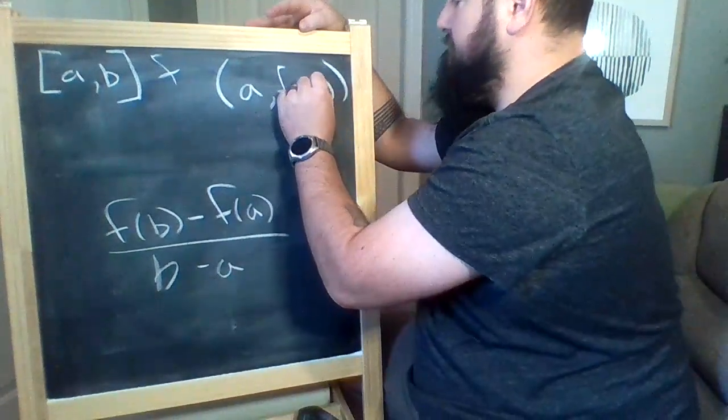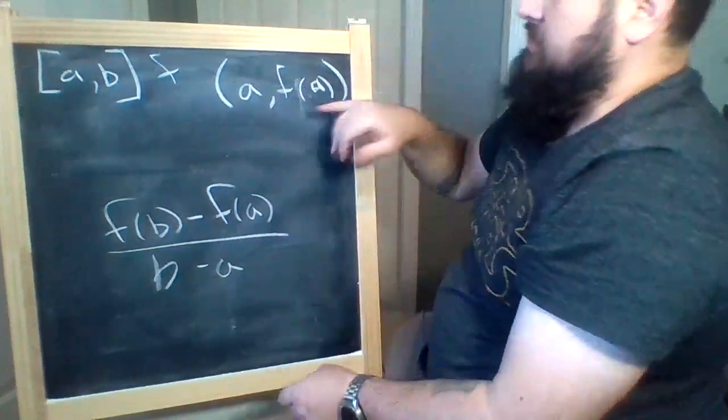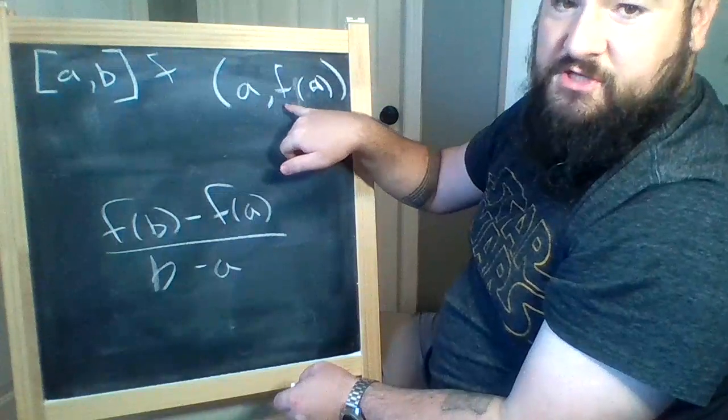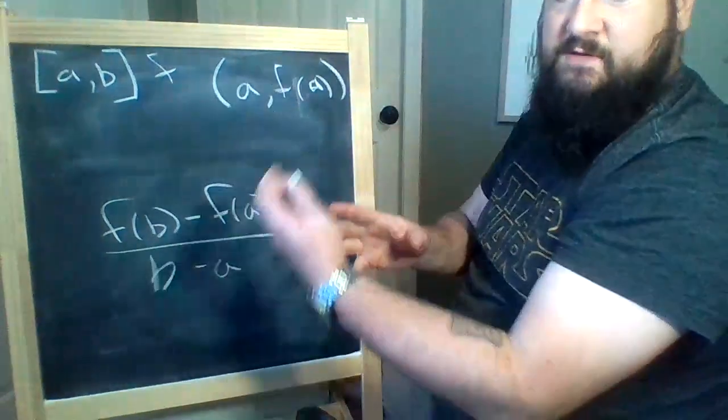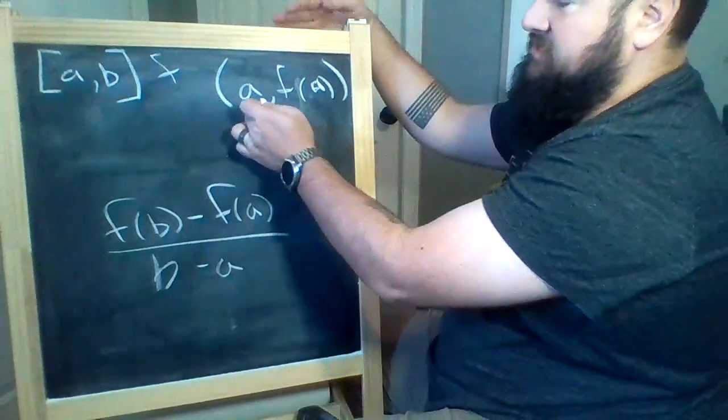By definition, this right here is the function f evaluated at the input of a. It's our output. We had that f(x) equals y, right? So this is the input, this is our output.